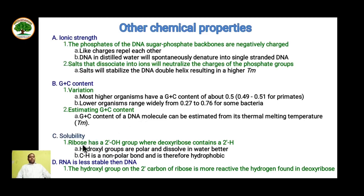Regarding solubility, DNA lacks the 2'-OH group present in RNA's ribose sugar. Therefore, RNA is more readily soluble than DNA, since hydroxyl groups are polar and dissolve in water better. The C-H bond is non-polar and thus hydrophobic, so RNA dissolves more in polar solvents than DNA. However, due to the extra OH group, RNA is more reactive and less stable than DNA. Hence, DNA is more stable and is the genetic material in most species.